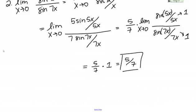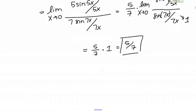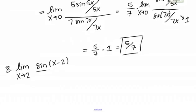I'm going to do one more problem that's even a bit more complicated. Number 3 is the limit as X goes to 2 of sine of X minus 2 over X squared minus 4. This looks pretty scary — I have X squared minus 4 in the denominator and X minus 2 in the argument of the sine, and X is going to 2 instead of 0. But we're going to use the same bag of tricks from numbers 1 and 2, with just a little extra step at the beginning.